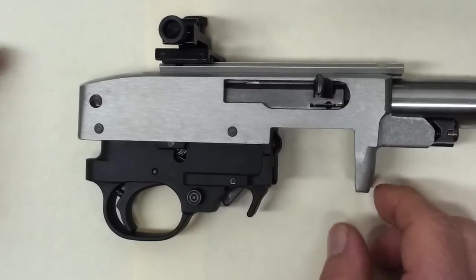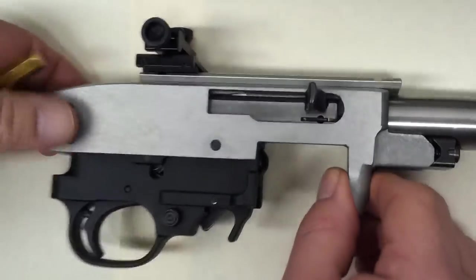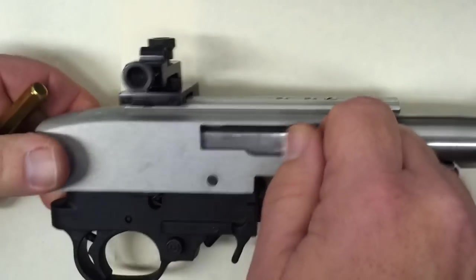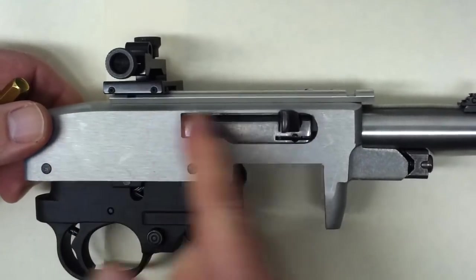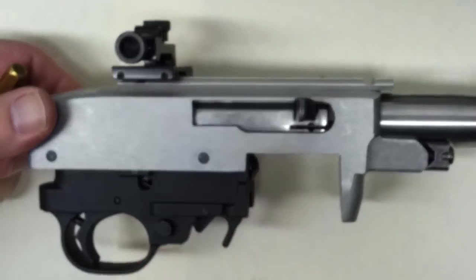We're going to do it from the start. Here all we've done is remove the action from the stock. We're going to rack the bolt to cock the hammer. That takes pressure from the hammer off of the bolt so that you can remove the trigger group easily.